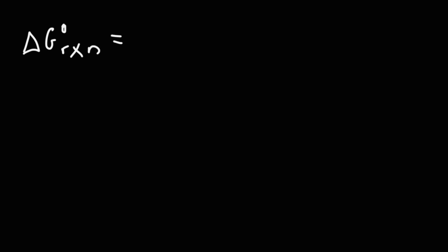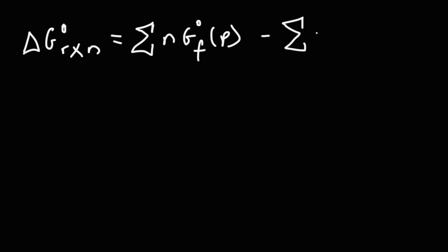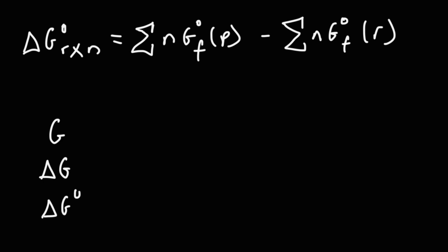Sometimes you need to calculate the standard free energy change for a reaction. To do that, you take the sum of the standard free energy of formation of the products, multiplied by the coefficients in the balanced reaction, minus the sum of the standard free energy of formation of the reactants.